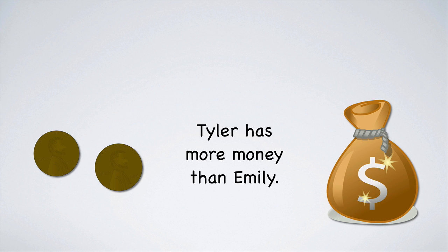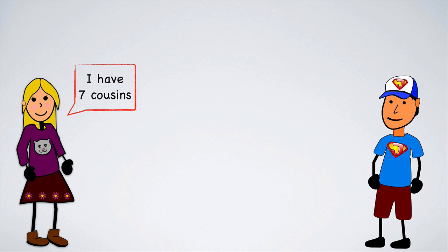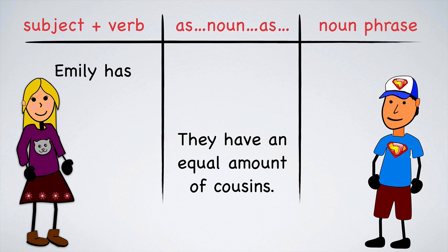Again, notice how the noun pets is plural even though we're only talking about one pet. Let's ask the kids another question. Emily, how much money do you have? I have two pennies. And Tyler, how about you? I have a jillion billion dollars. I'm not sure that's even a number, but let's go with it. Tyler has more money than Emily. We'll say Emily doesn't have as much money as Tyler. Emily, how many cousins do you have? I have seven cousins. Tyler, how about you? I have seven too. They have an equal amount of cousins. This will be a positive sentence. Emily has as many cousins as Tyler.